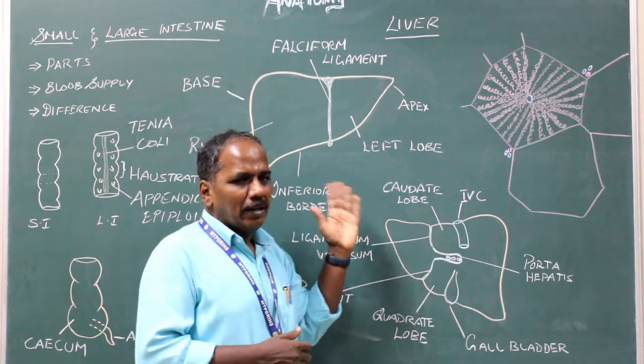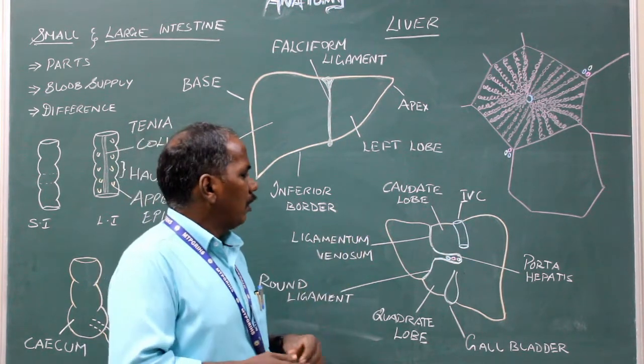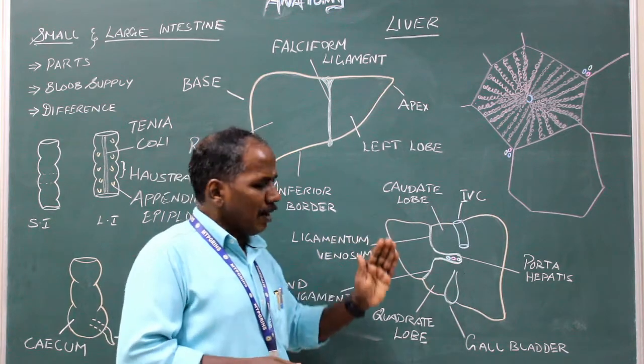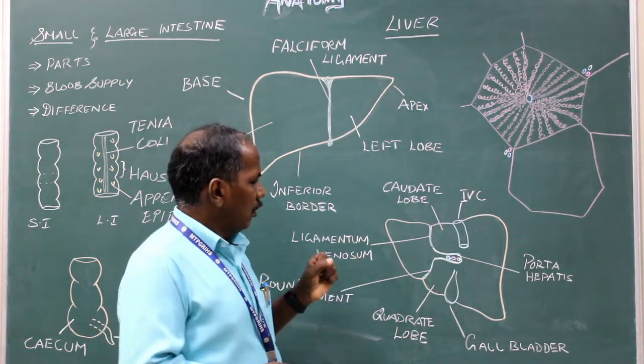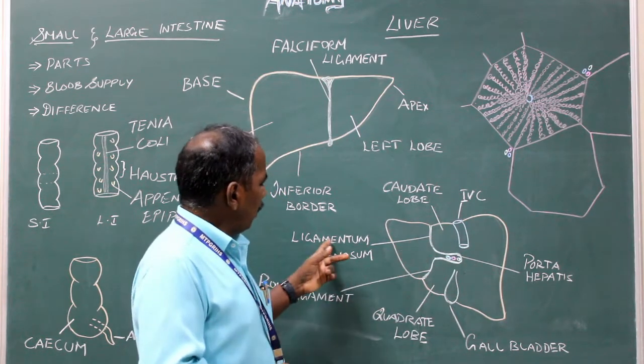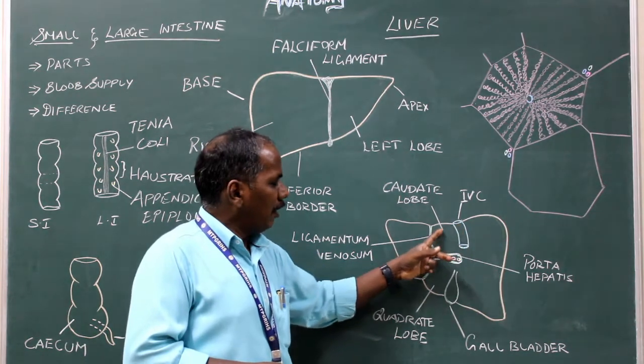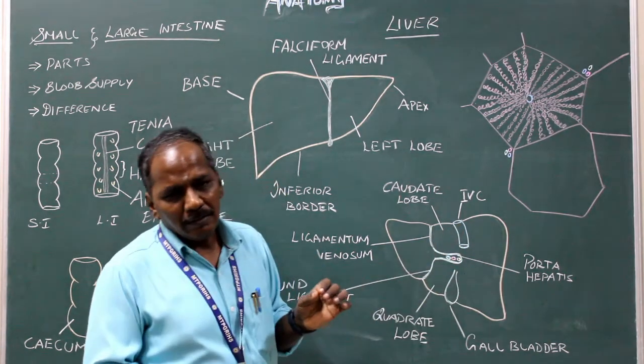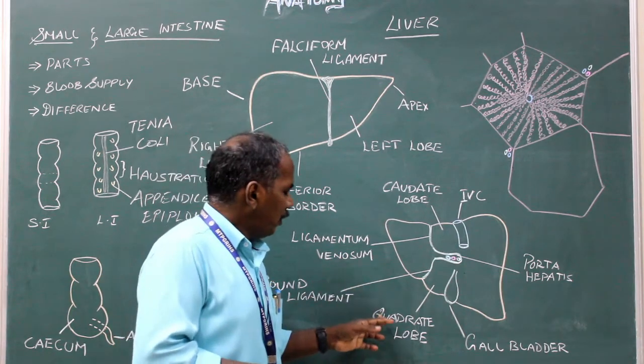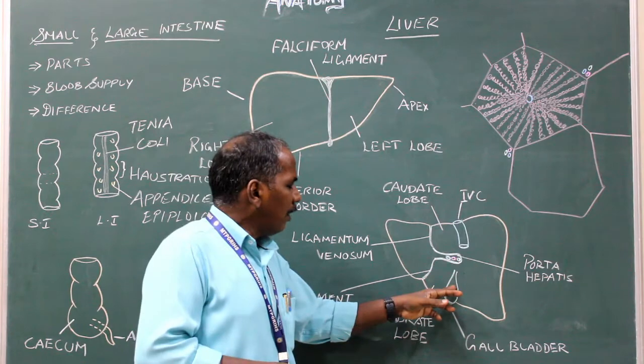In addition to the right and left lobe, there are two more lobes: caudate lobe and quadrate lobe on the posterior aspect. The caudate lobe is situated between the ligamentum venosum and the inferior vena cava. And quadrate lobe is present between the gall bladder and round ligament.